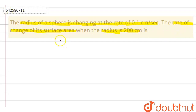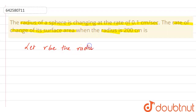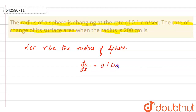So now here, we can clearly see that we have been given that the rate of change of the radius is 0.1 cm per second. Let R be the radius of the sphere. We can write this as dr/dt equals 0.1 cm per second, because in the question the radius of the sphere is changing at the rate of 0.1 cm per second.